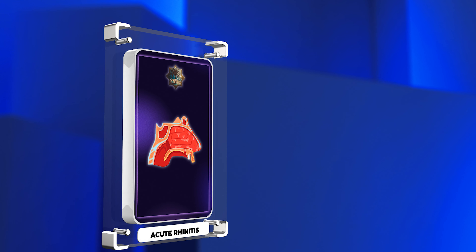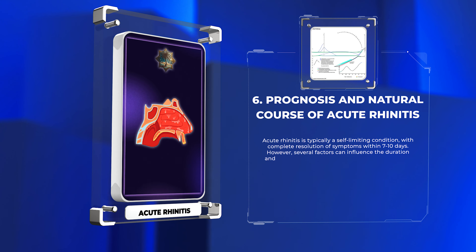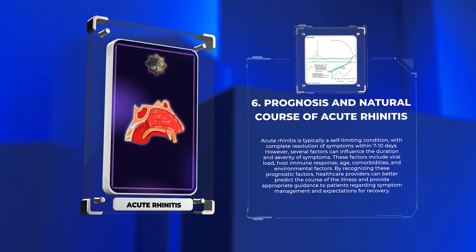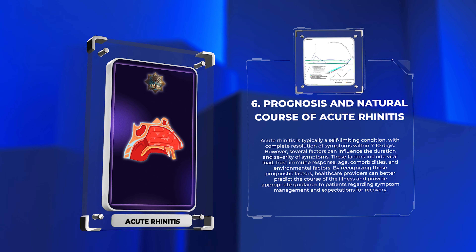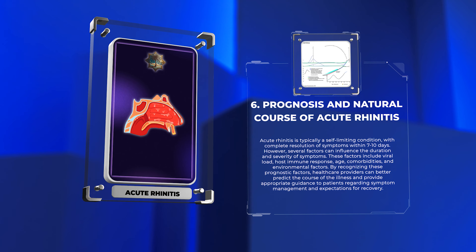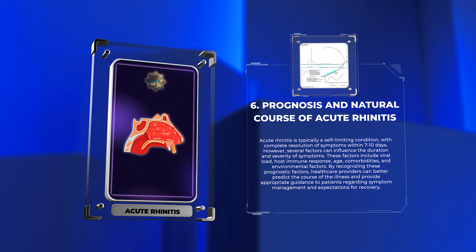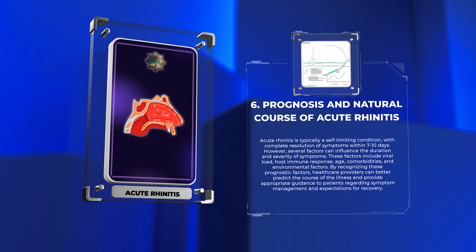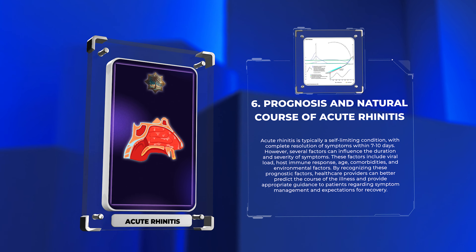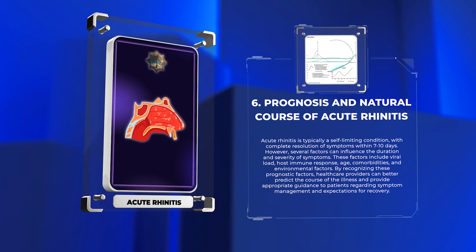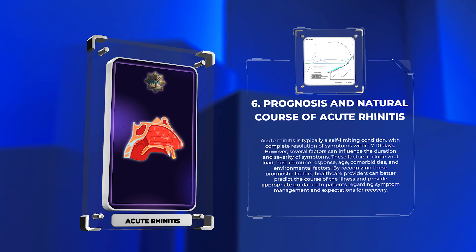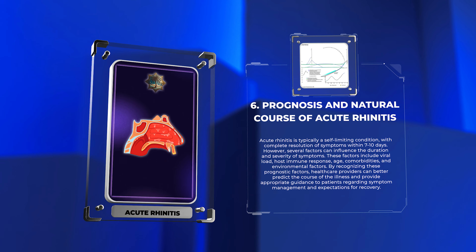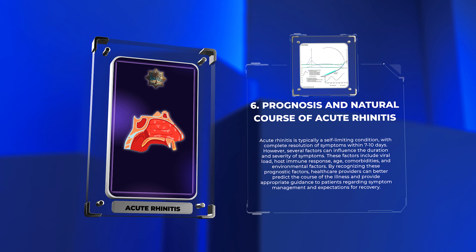Acute rhinitis is typically a self-limiting condition, with complete resolution of symptoms within 7–10 days. However, several factors can influence the duration and severity of symptoms. These factors include viral load, host immune response, age, comorbidities, and environmental factors. By recognizing these prognostic factors, healthcare providers can better predict the course of the illness and provide appropriate guidance to patients regarding symptom management and expectations for recovery.